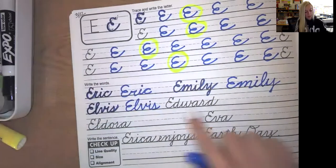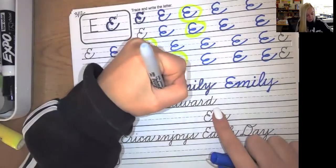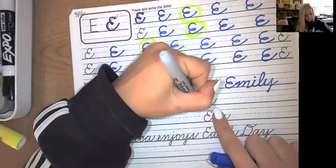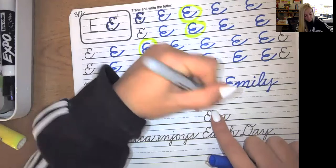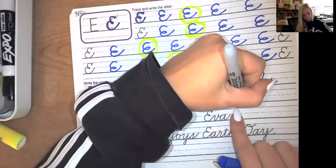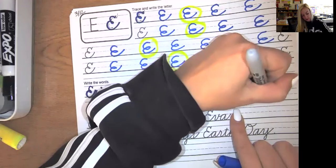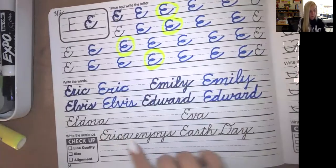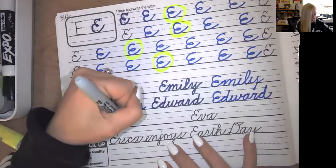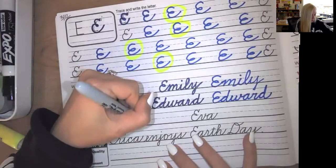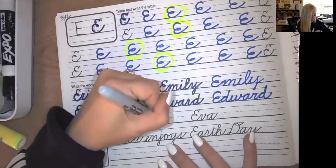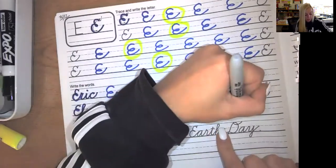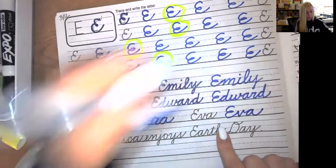And Edward. Edward. E-D-W-A-R-D. Edward. Now we have Eldora. You can trace it. Get right into writing it. And Eva. E-V-A. That was a shorter name.